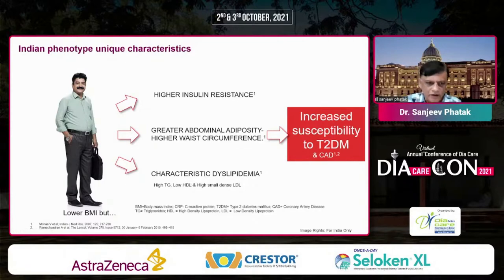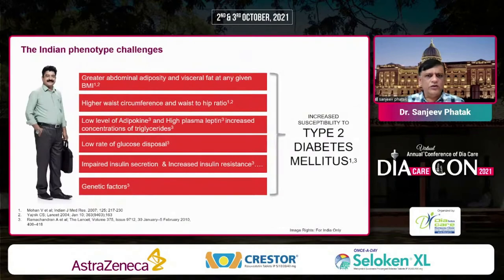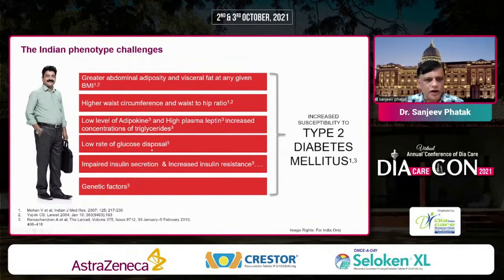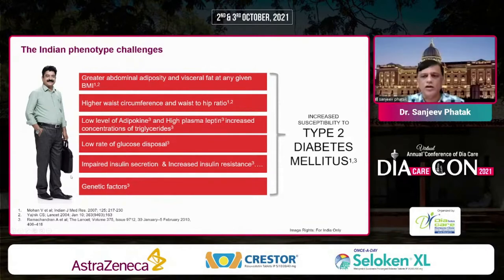Yesterday, Dr. Mohan in his Precision Diabetes Oration described that this is a typical phenotype Indians have of low HDL — such low HDL is not found in any other population, not even other Asian populations. We have high visceral fat at any given BMI, high waist circumference, high waist-to-hip as well as waist-to-height ratio, low adipokines, high leptin, lower rate of glucose disposal, impaired insulin secretion, and increased insulin resistance — all accountable not only for type 2 diabetes but also atherosclerosis.